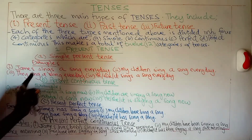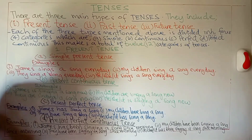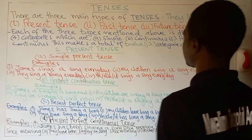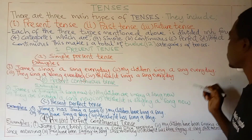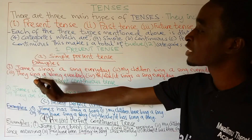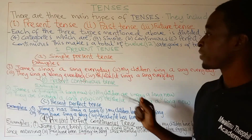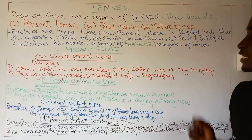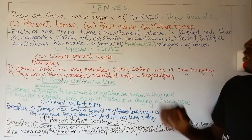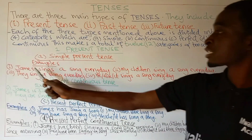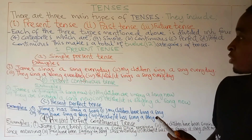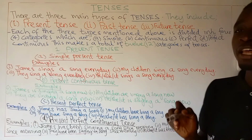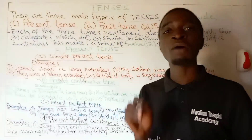The first sentence is: James sings a song every day. Our second sentence is: my children sing a song every day. Our third: they sing a song every day. Our fourth sentence is: he or she or it sings a song every day. Now in these four examples, when we use a single name or a pronoun he, she, or it, on the main verb we should add the letter S.